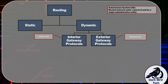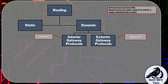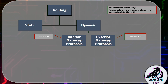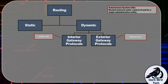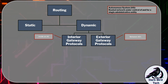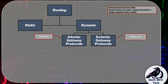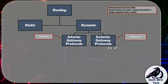Inside of ISP infrastructure, they're using interior gateway protocols to get traffic from one end of their network to the other. And then between us and our ISP, and especially between ISPs, they will use exterior gateway protocols. The most notable exterior gateway protocol that exists is BGP, or the Border Gateway Protocol.